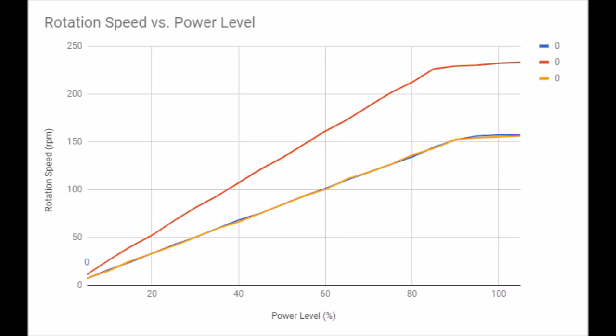This is my completed graph of rotation speed versus power level, which shows the relationship between these two variables. The blue line represents the EV3 large motor, the orange line represents the NXT motor, and the red line represents the medium motor.